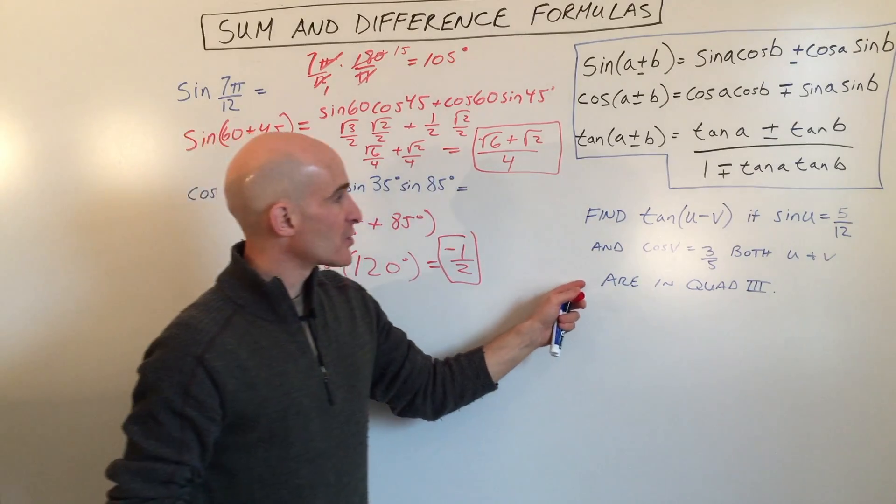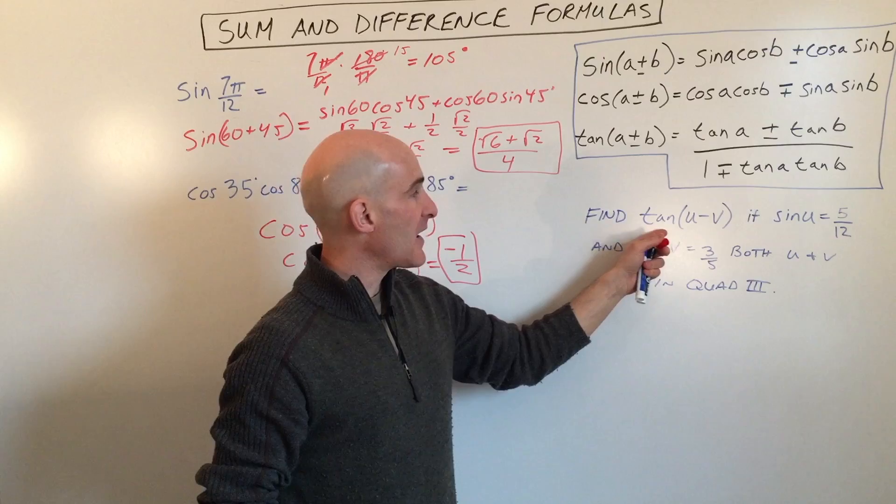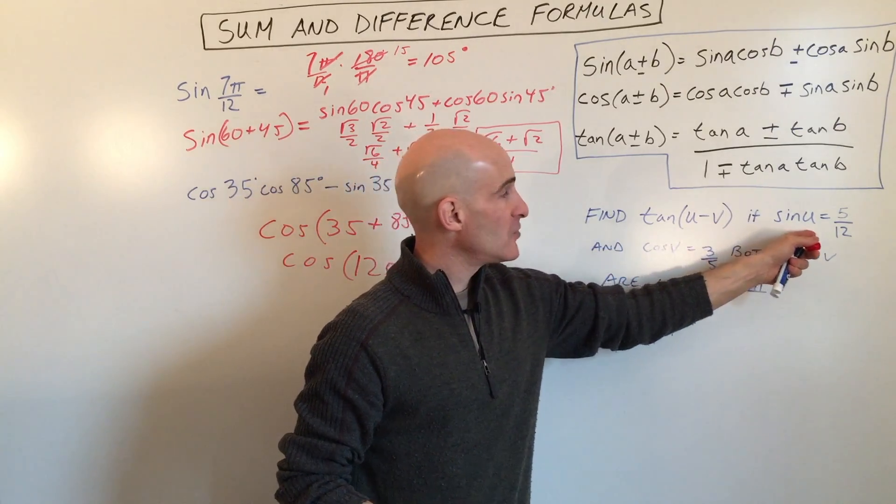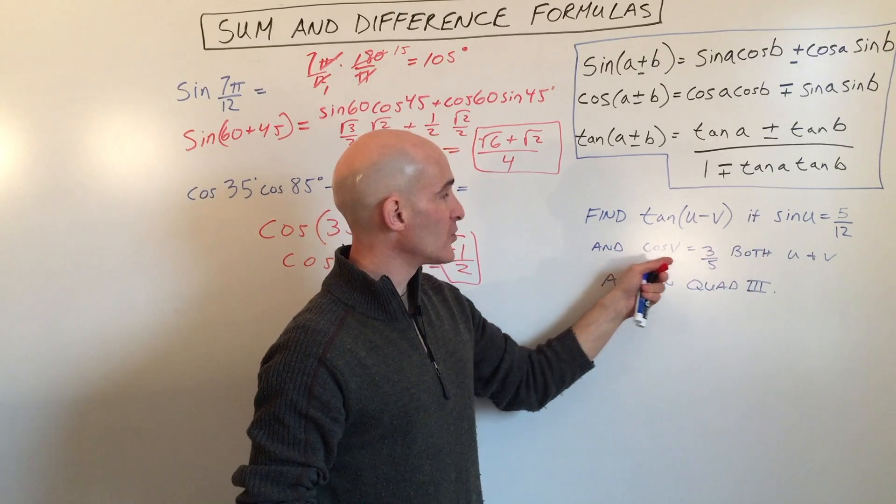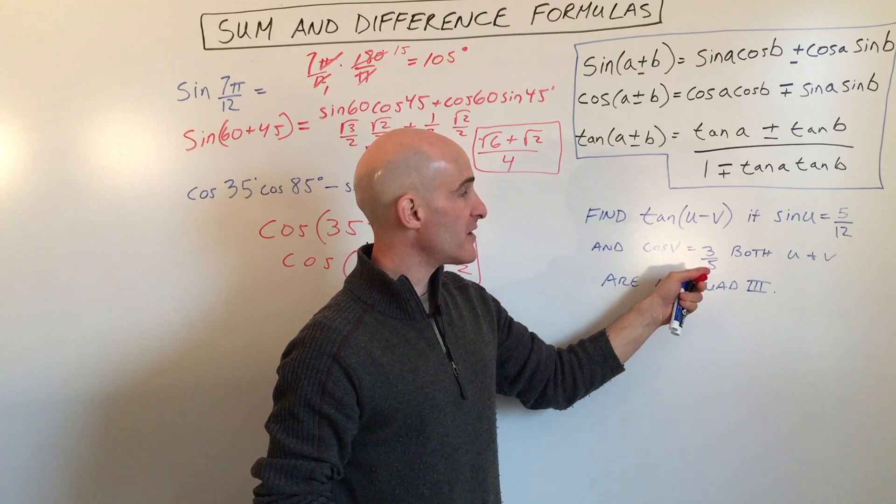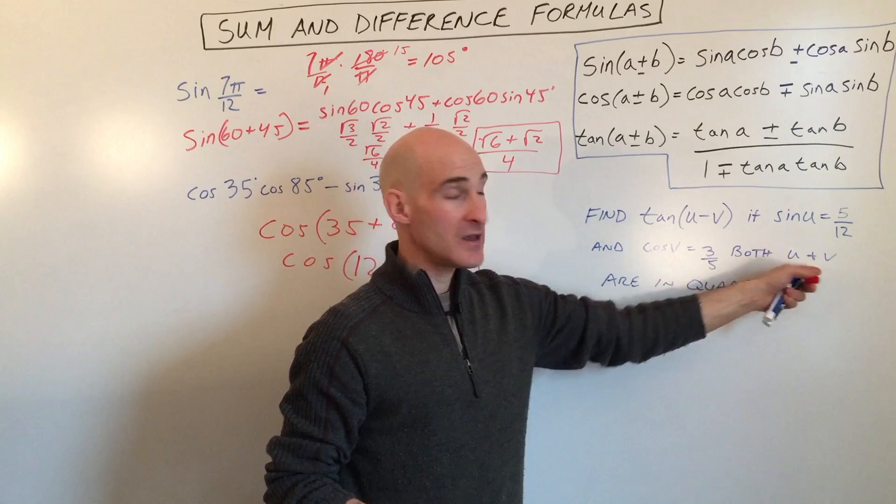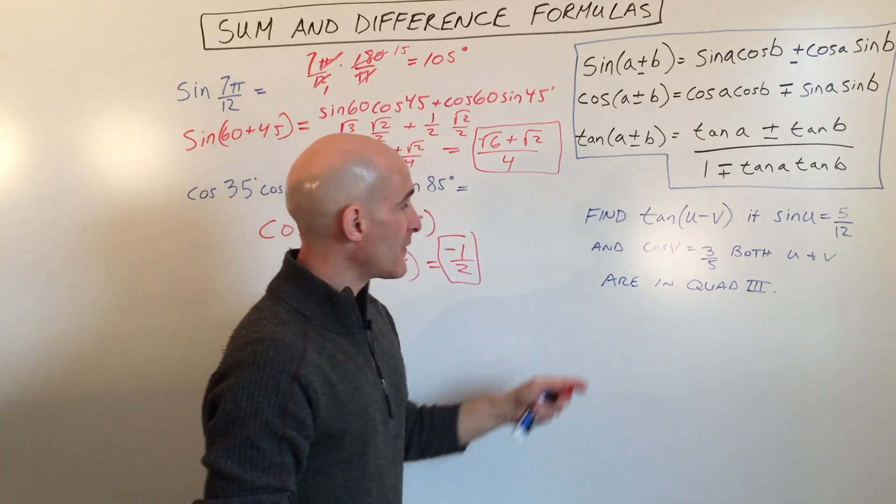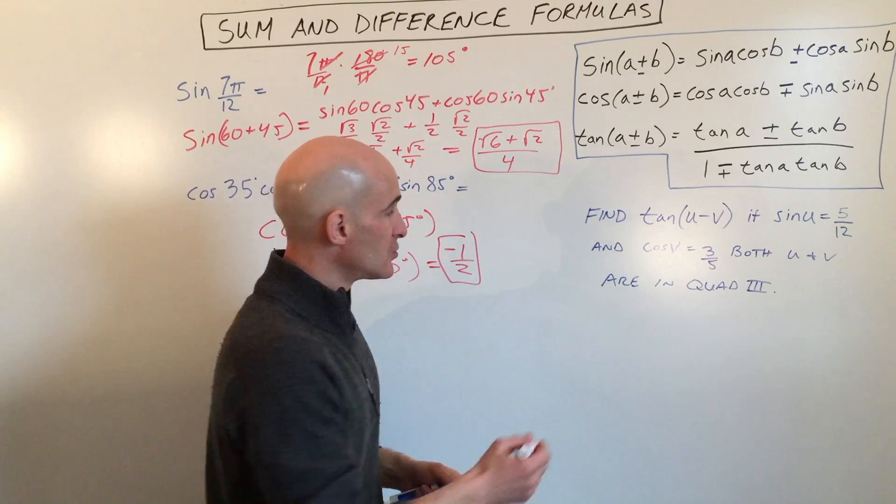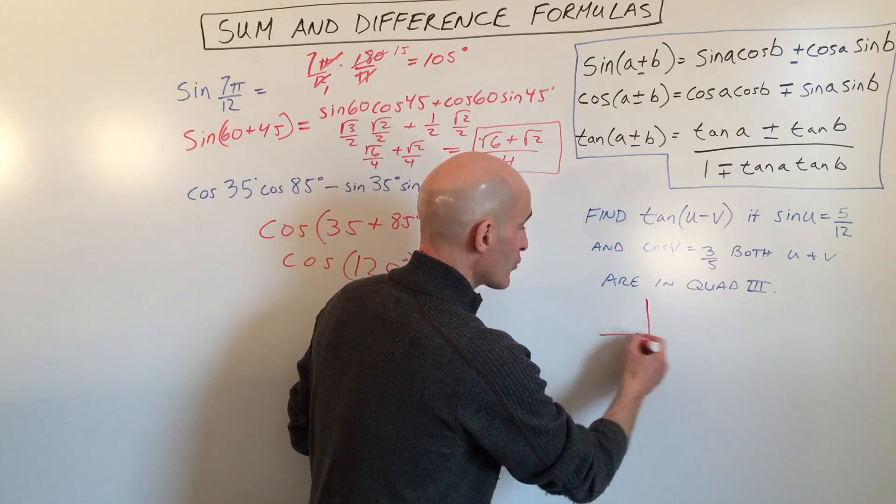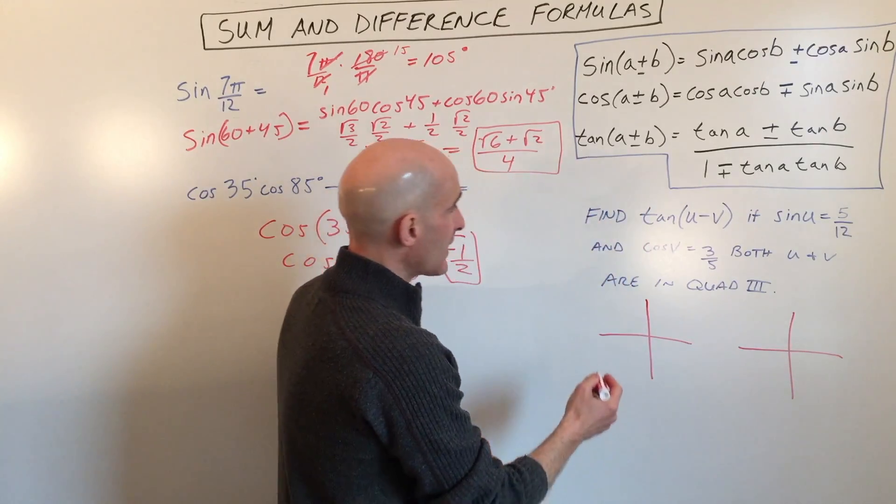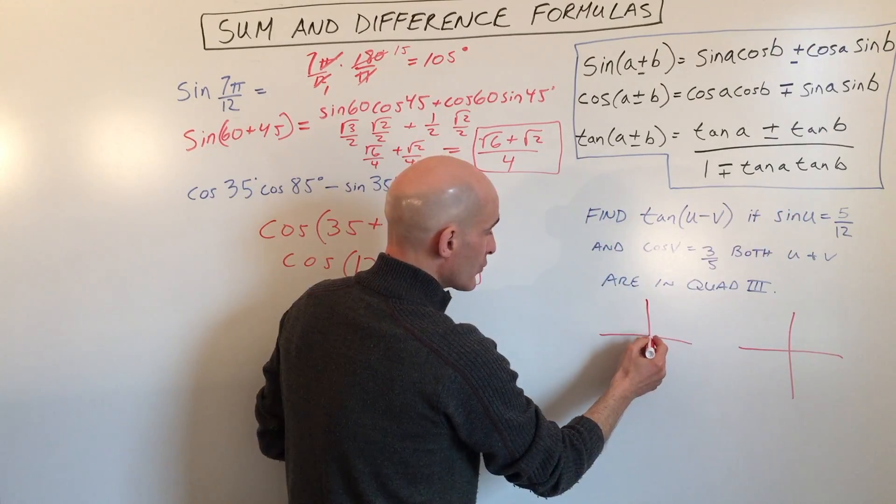So now the last question we're going to talk about is, how do you find the tangent of u minus v if sine of u equals 5 twelfths and cosine of v equals 3 fifths? Both angle u and v are in quadrant 3. So what I recommend for this one is to draw the two triangles in their respective third quadrant. So we'll do that here.